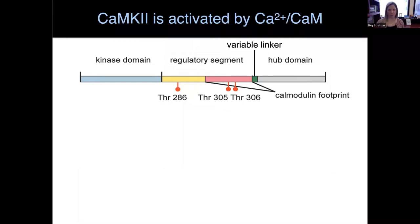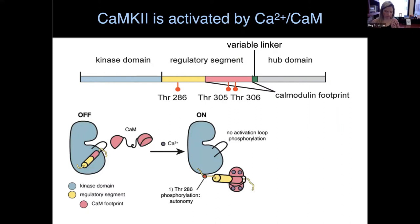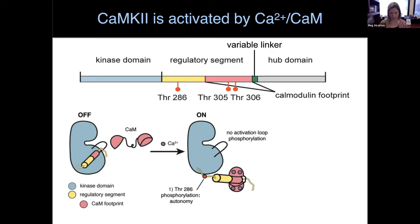CaMK2, or calcium-calmodulin-dependent protein kinase 2, looks like this. Each subunit is comprised of a kinase domain, a regulatory segment, a variable linker region, and then a hub domain. In the regulatory segment there are three regulatory phosphorylation sites, and also the calmodulin binding footprint. The kinase domain looks like every other kinase you've ever seen. The regulatory segment regulates CaMK2 activity by blocking the substrate binding pocket in its off state — if there's no calcium around, the regulatory segment blocks the pocket, keeping the enzyme off.